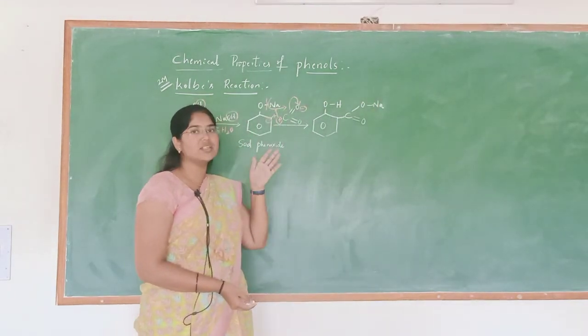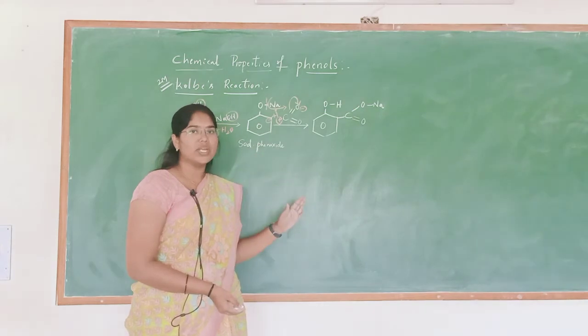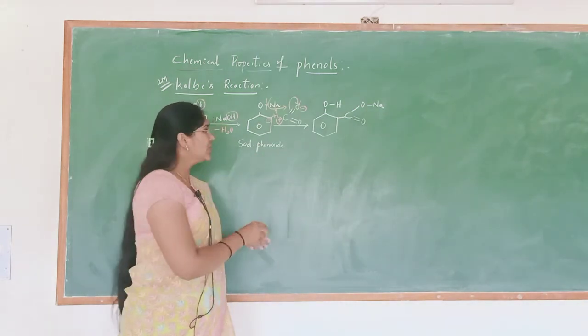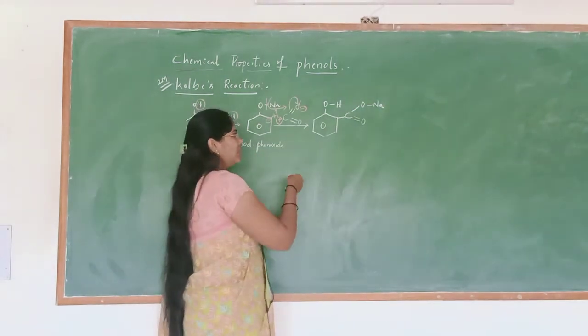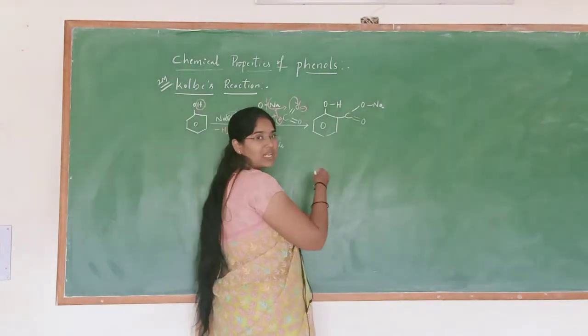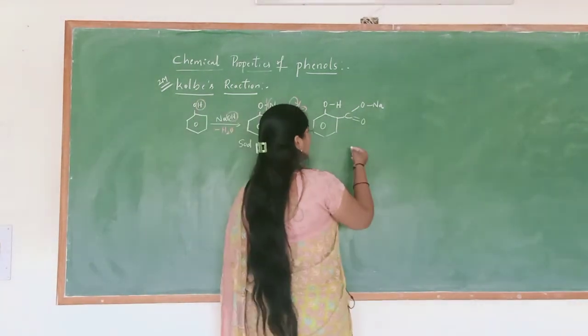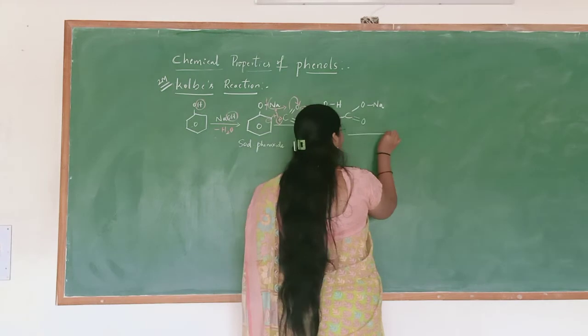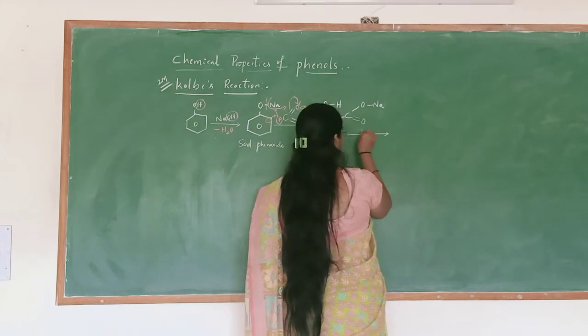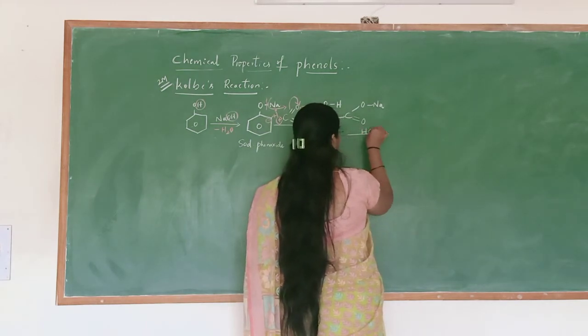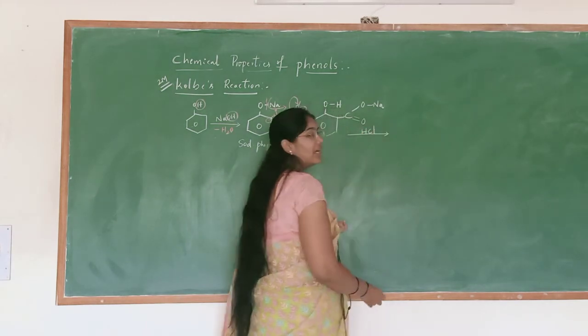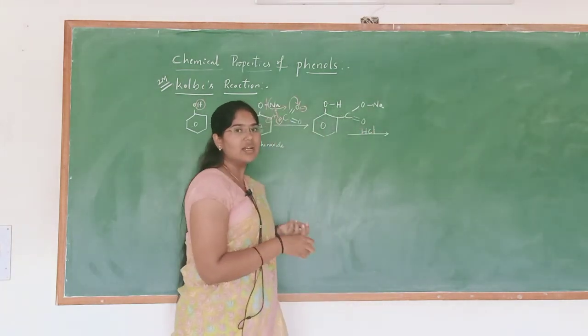This carbon is attached to oxygen by a double bond and here a single bond is present with oxygen. To this negatively charged oxygen, now sodium is attached. This gives the sodium salt of salicylic acid.